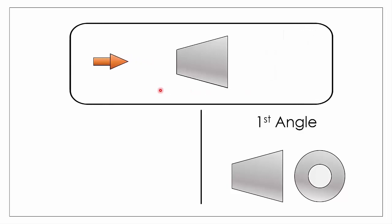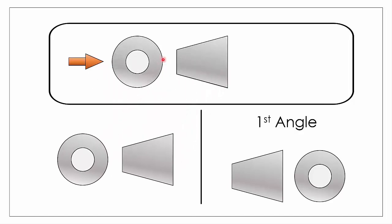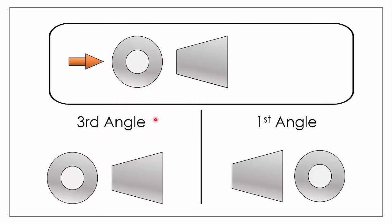Likewise for third angle projection, if we're looking in from the left side of our object, our end view is going to appear on the left hand side. So that's going to form the basis of our third angle projection.